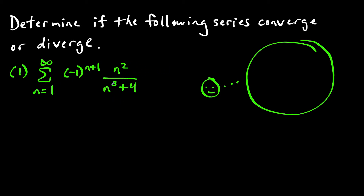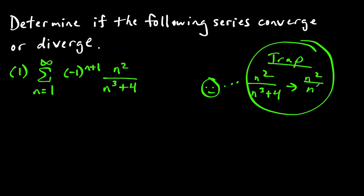A very dangerous trap with this question: if you look at n squared over n to the third plus four and only consider the leading terms n squared over n to the third, this simplifies to one over n, and someone not careful will think this is the harmonic series and say it diverges. But because this is an alternating series, the entire series is actually going to converge.